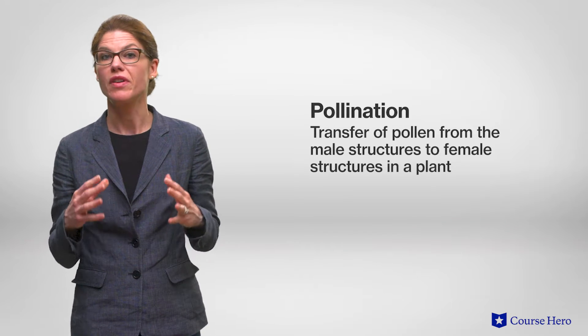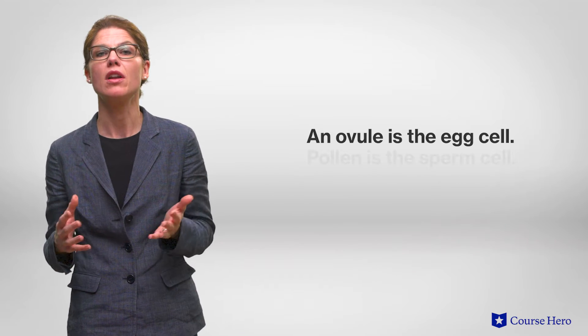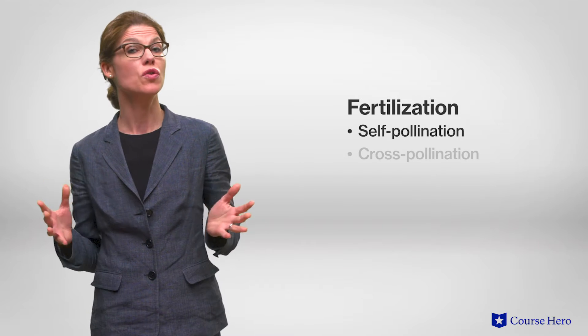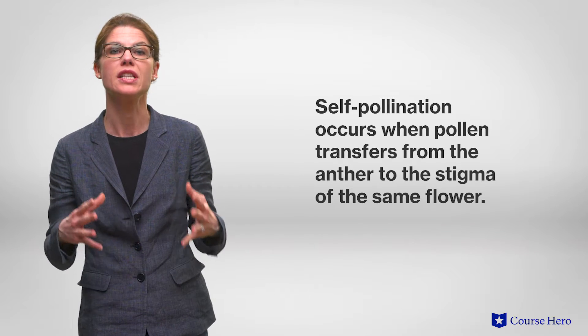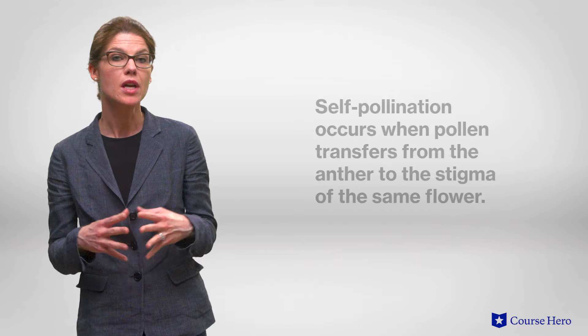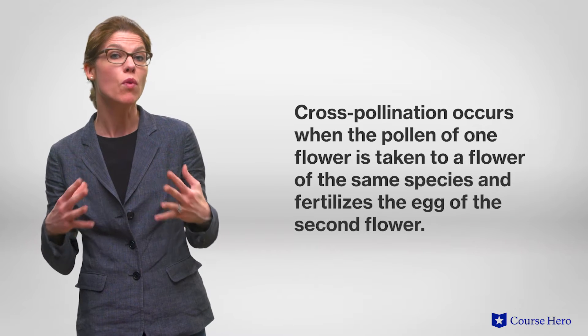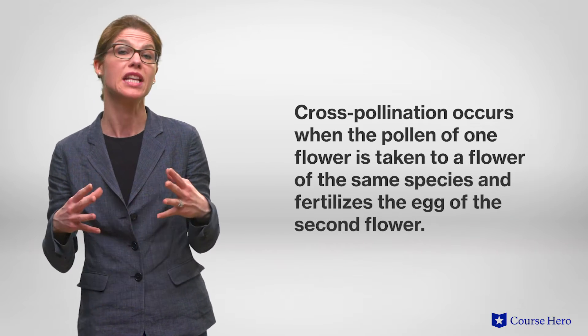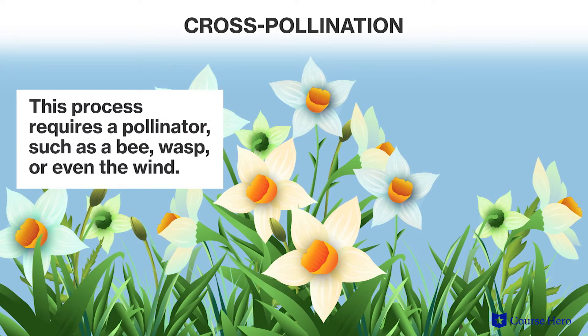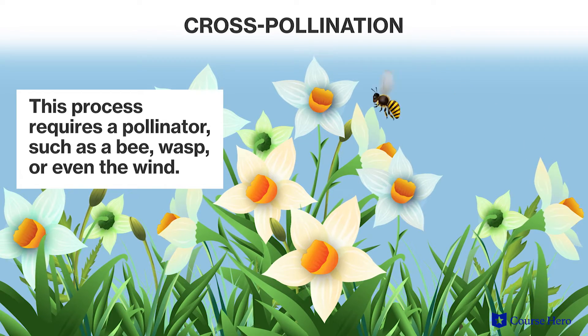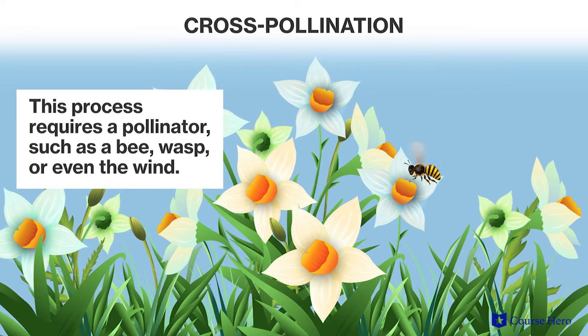Now that we have looked at the structure of a flower in detail, let's take a closer look at pollination — the fertilization of an ovule, the egg cell, by pollen, the sperm cell. This can occur in two ways: by self-pollination or cross-pollination. Self-pollination occurs when pollen transfers from the anther to the stigma of the same flower, whereas cross-pollination occurs when the pollen of one flower is taken to a flower of the same species and fertilizes the egg of the second flower. Cross-pollination requires a vector or a pollinator, such as bees, wasps, or even the wind.